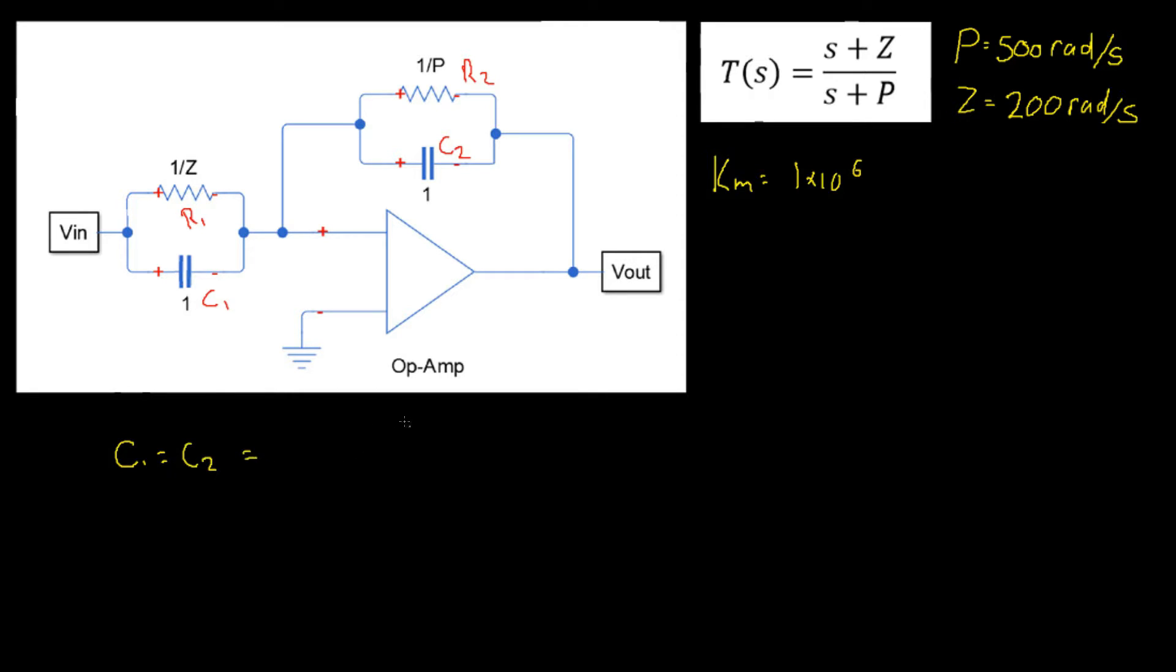We can say that the new capacitor values are our original capacitor value 1 divided by our scaling factor. Therefore 1 divided by 1 times 10 to the power of 6 will give us a capacitance of 1 microfarad.